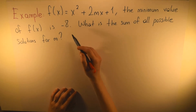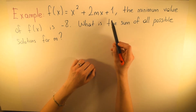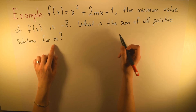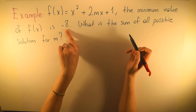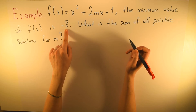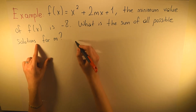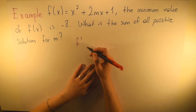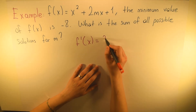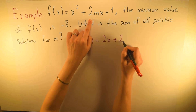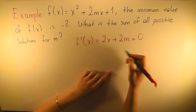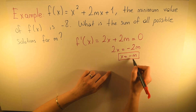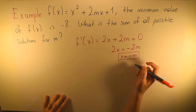Let's continue with this example: f(x) = x² + 2mx + 1. The minimum value of f(x) is minus 8. What is the sum of all possible solutions for m? The minimum value of f(x) equals minus 8 means the local minimum value equals minus 8. Let's first find the derivative of f(x). When we make that equal to zero, we will find the minimum and maximum values.